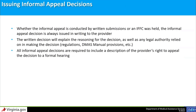The last step in the informal appeal process is the issuance of a written informal appeal decision. Whether the appeal is conducted via written submissions or an IFFC, the informal appeal decision is always issued in writing to the provider. The written decision always contains the reasoning for the decision, any legal authority relied upon, and a description of the provider's right to appeal to a formal hearing. Informal written appeal decisions must be issued within 180 days of the date the appeal is filed with the appeals division. Only providers have the right to appeal the informal decision to the formal appeal level; the department or its contractors cannot appeal an informal appeal decision.